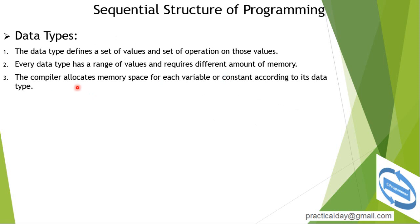The compiler allocates memory space for each variable or constant according to its data type. A compiler is the tool that converts your source code to object code. The compiler allocates memory space for each variable or constant according to its data type.